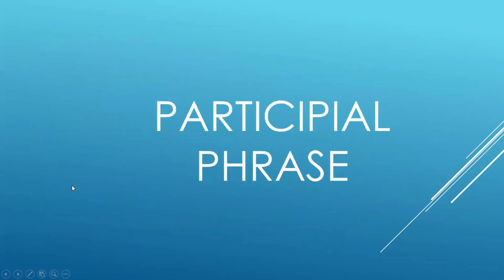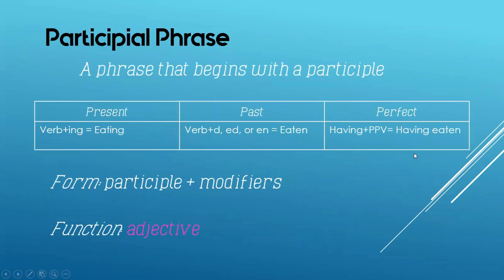Now let's go to the last type of verbal phrase that may function as an adjective or an adverb — what we call participial. A participial phrase is a phrase that begins with a participle: a present participle form of the verb or past participle form of the verb. When we say present participle, it is verb plus -ing. For past participle, we have verb plus -d, -ed, -en, or an irregular form. It can also be a perfect participle: 'having' plus the past participle form of the verb.